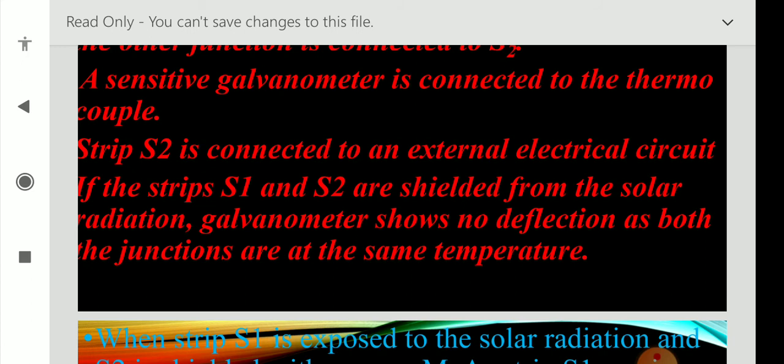You may see in the figure, if the strips S1 and S2 are shielded from the solar radiation, galvanometer shows no deflection as both the junctions are at the same temperature. The strip S1 and S2 both are shielded from the solar radiation, that is the reason no deflection will be found in the galvanometer.